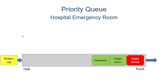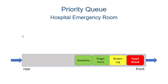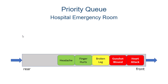Now let's say someone comes in with a broken leg, which is a medium priority. They would be able to skip all the existing low priority patients, but would still be behind the high priority patients. Then if another high priority patient comes in, they would go after the last high priority patient in the queue.